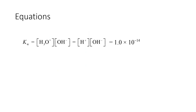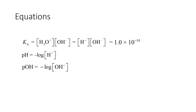Let's review our equations. Kw is the equilibrium expression for the auto-ionization of water and equals the concentration of H+ times the concentration of OH−, which must equal 1.0 times 10 raised to the minus 14 at 25 degrees Celsius. The pH is the negative log of the concentration of H+. The pOH is the negative log of the concentration of OH−. The pK is the negative log of the equilibrium constant. And finally, the pH plus the pOH for any solution at 25 degrees Celsius equals 14.00.